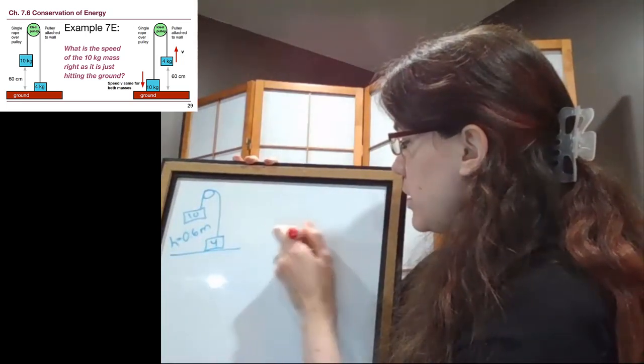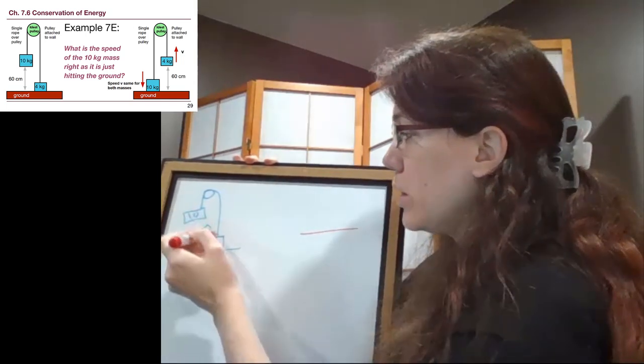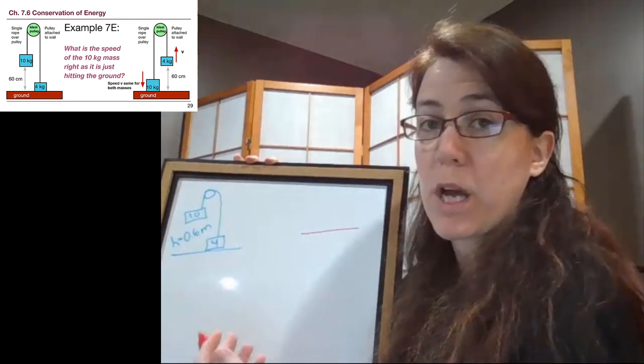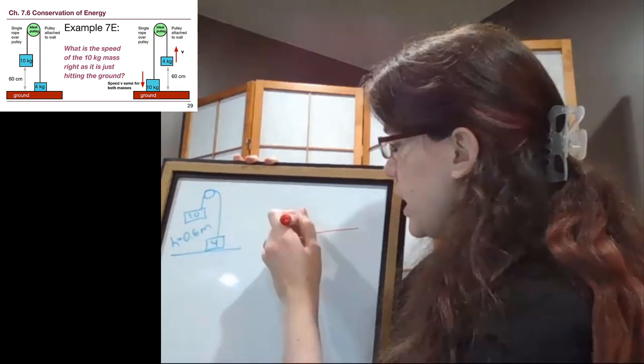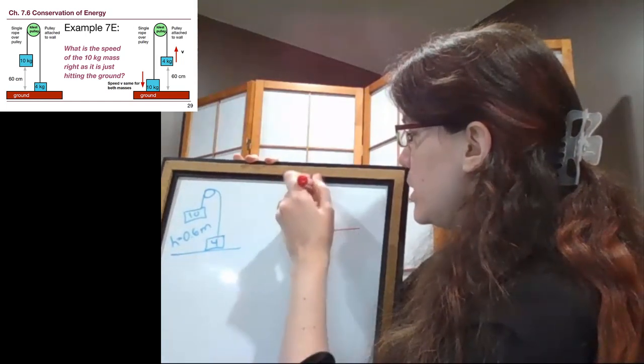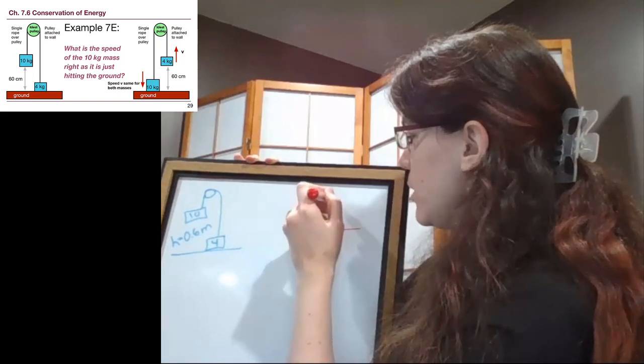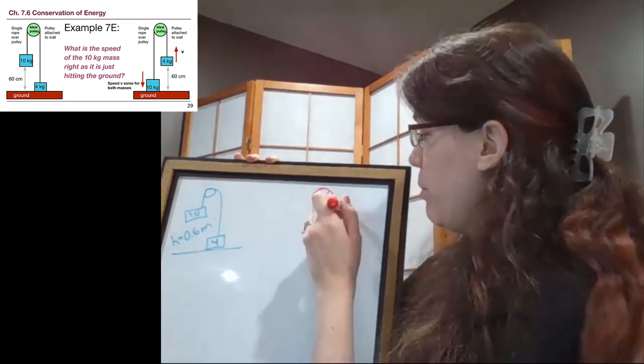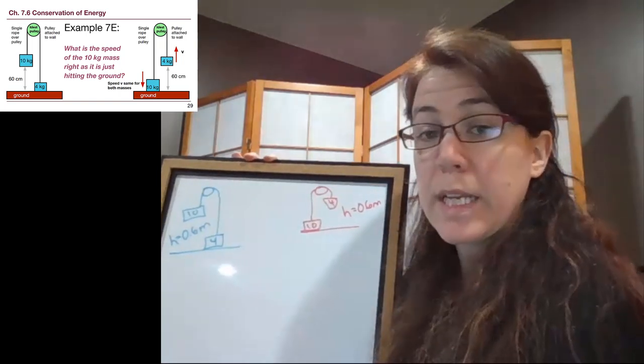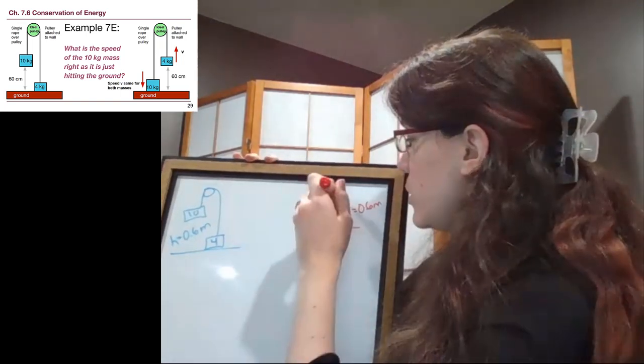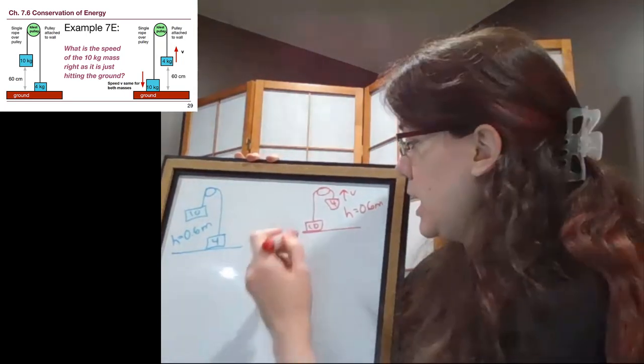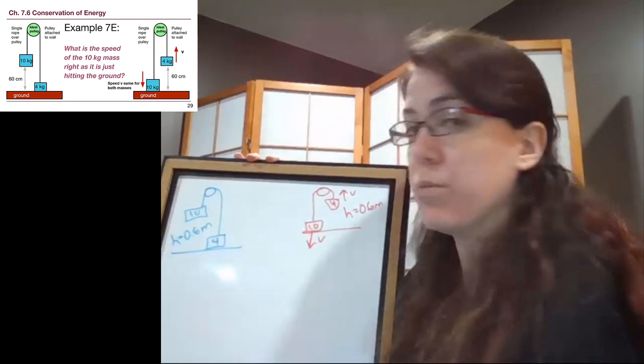The after picture here is when we look at these two blocks, the 10 kilogram block is going to drop, and the 4 kilogram block will then be pulled upwards. The 10 kilogram block is on the ground by the time we talk about the end of the problem, and the 4 kilogram block is up in the air by, again, a height of 0.6 meters. The key thing is that this one is being moved upwards as the whole system is going around, and this one, as it hits the ground, is still moving.